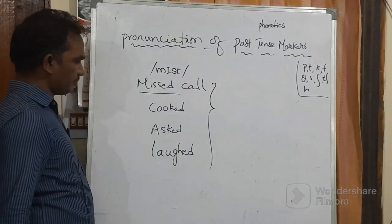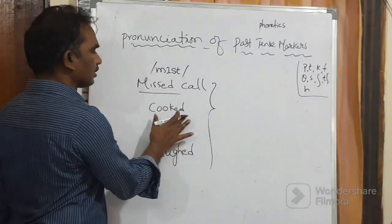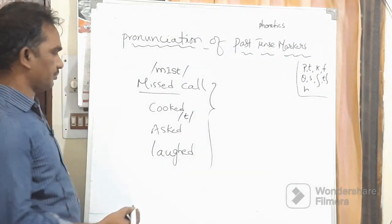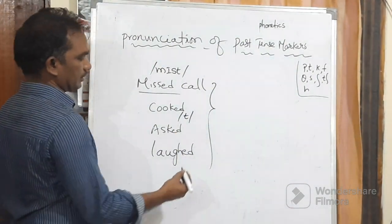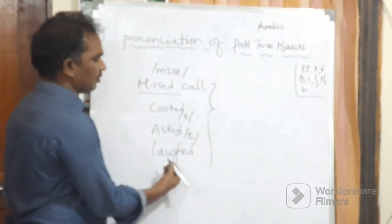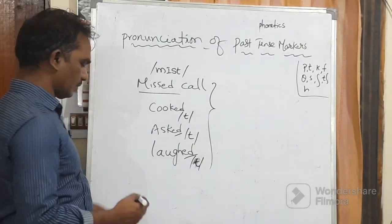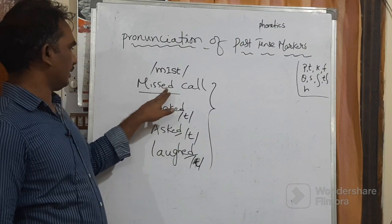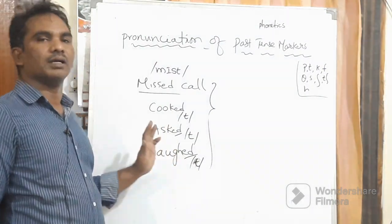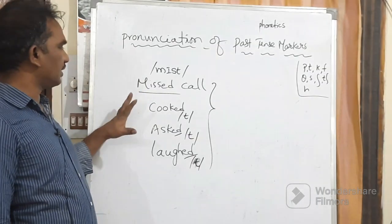Let's try to understand how to pronounce these words. There are some rules you need to understand. Look at these words: 'missed call' — the last sound is a /t/ sound. 'Cooked' — the last sound is a /t/ sound. 'Asked' — the last sound is a /t/ sound. 'Laughed' — the last sound is also a /t/ sound. So all these past tense markers — ed, ed, ed, ed — are pronounced as /t/.